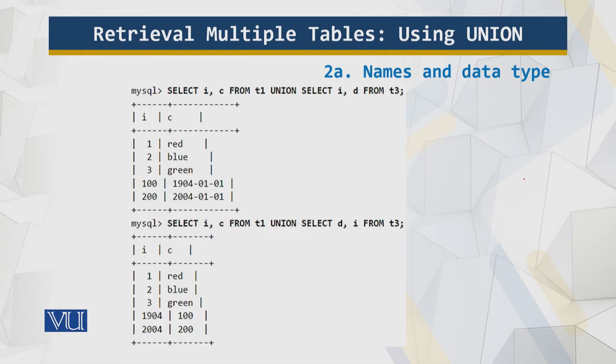Looking at the properties: the names and data types for the columns of the UNION result come from the names and types of the columns in the first SELECT. The second and subsequent SELECT statements in the UNION must select the same number of columns, but they need not have the same names or types. You see here we have integer and character, and we have integer and date.